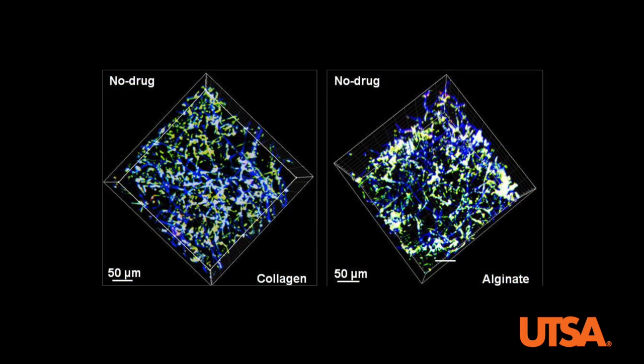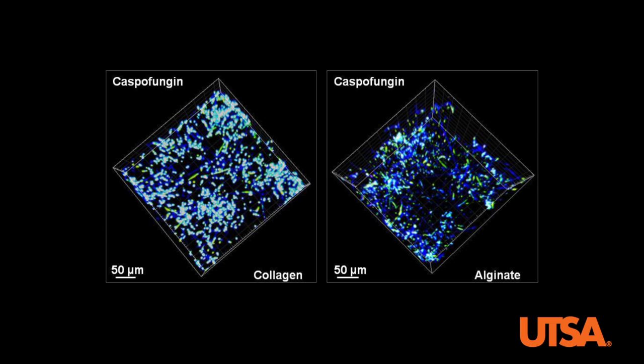We used two dyes: one is a green fluorescent live stain, while the other is a blue fluorescent cell wall stain. First, let's look at the biofilms that are not treated with any drugs. As you can see, the biofilms appear whitish because of the overlay of green and blue colors, and the cells look alike in both collagen and alginate gels. But when we look at the biofilms treated with caspofungin, we see that the cells in collagen and alginate look very different. The cell density has gone down significantly throughout the depth of the alginate gels, but not so much in the collagen gels. This shows that caspofungin is concentrated only on the top and does not reach the bottom in collagen gels, but it does penetrate throughout in alginate.